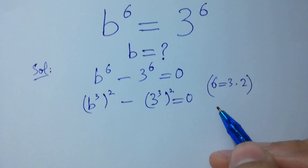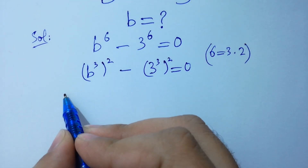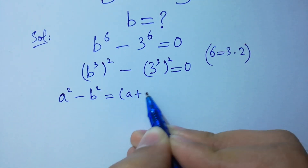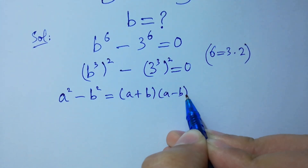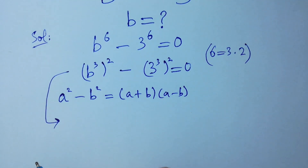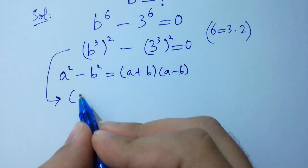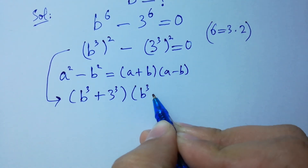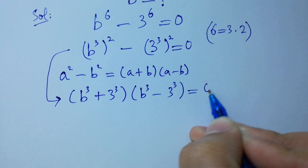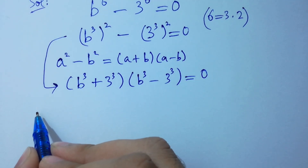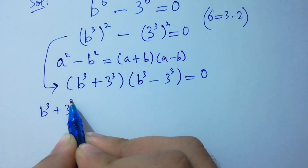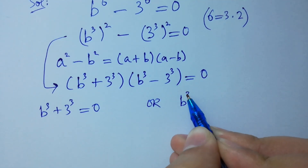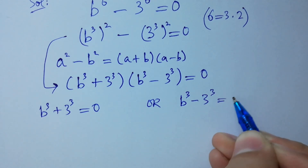As you know, the formula A squared minus B squared equals A plus B times A minus B. So we have B cubed plus 3 cubed times B cubed minus 3 cubed equal to 0. Therefore, either B cubed plus 3 cubed equals 0, or B cubed minus 3 cubed equals 0.